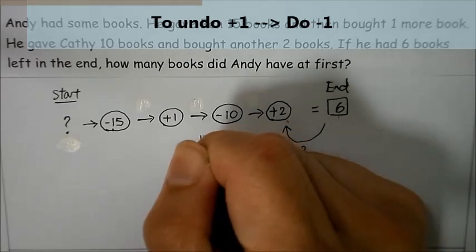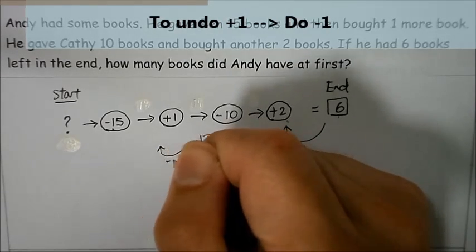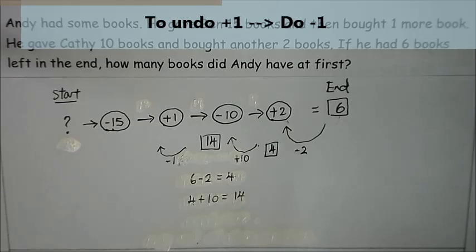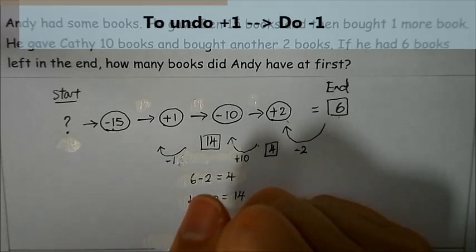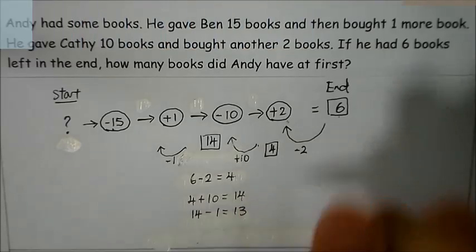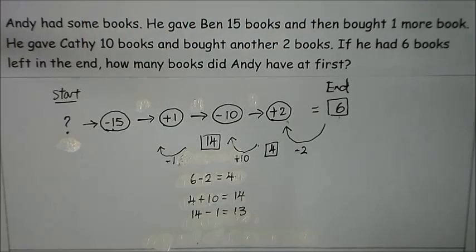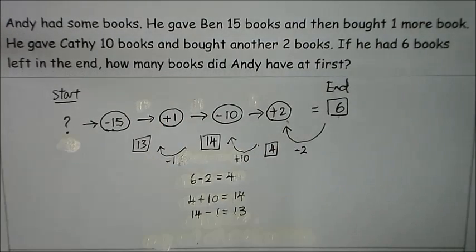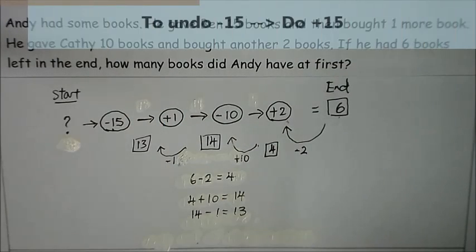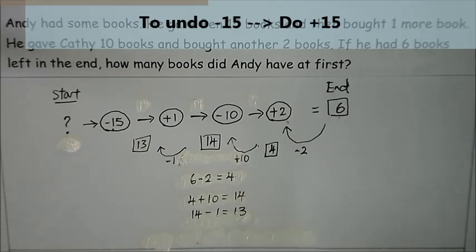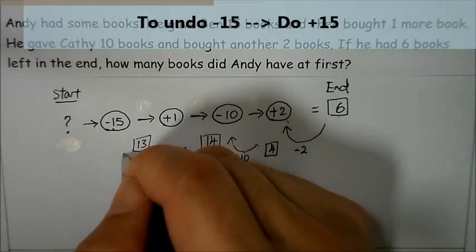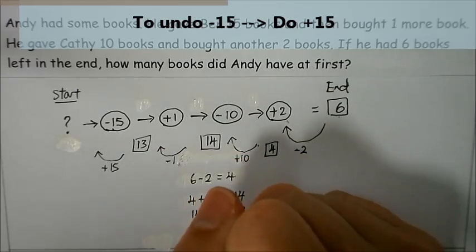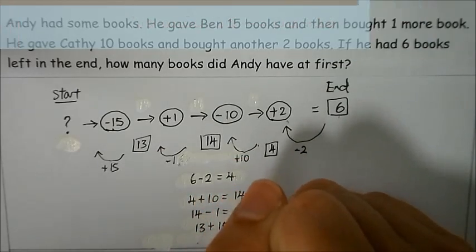And after I get this fourteen, I need to minus one. Why? We take it that Andy did not buy this extra book, which is fourteen minus one gives me thirteen. After that we have to plus fifteen because we take it that Andy did not give Ben the fifteen books. So thirteen plus fifteen equals to twenty eight.